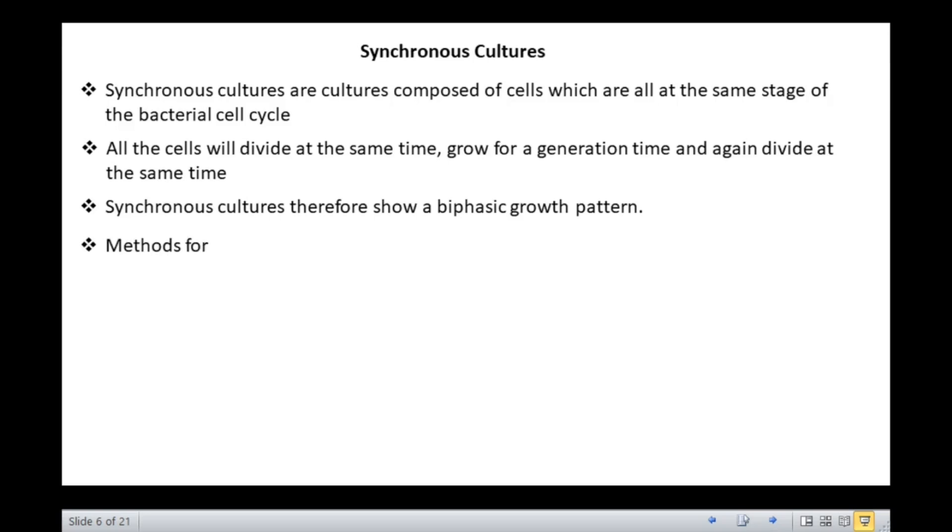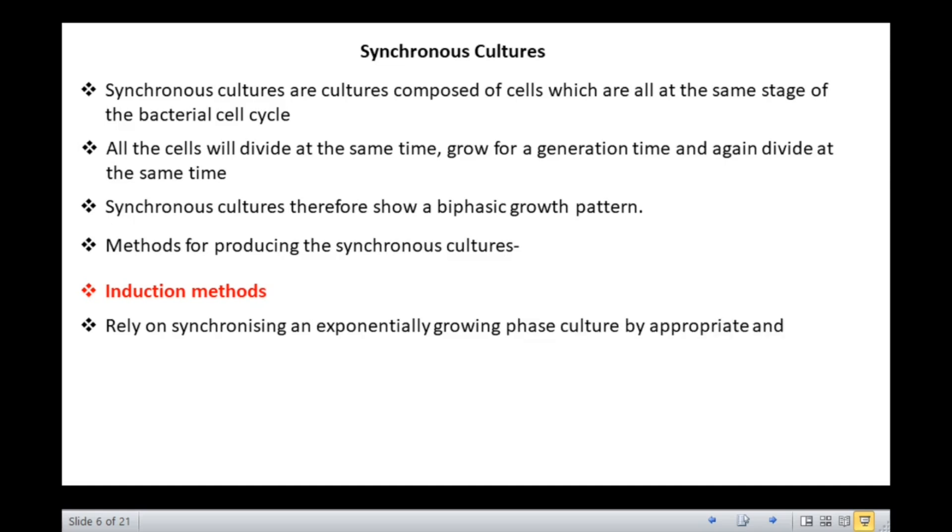There are two methods available for producing the synchronous cultures. The first are induction methods. They rely on synchronizing an exponentially growing culture by appropriate and usually sudden changes in the environment, such as alteration in the temperature, concentration of nutrients, or illumination for photoautotrophs.